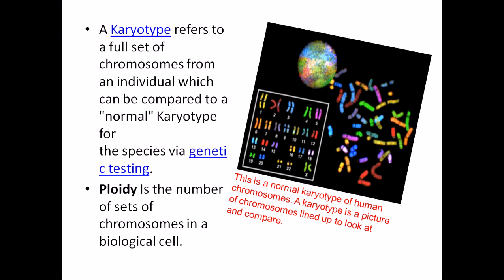To know whether the chromosome set present in the human body is normal, the only way is to produce a karyotype. A karyotype is a picture of all the chromosomes present in a cell. We produce it on a glass slide and add different fluorescent tags to visualize whether each chromosome is correct in length, or whether there is any duplication, deletion, or change in shape and size. A normal karyotype shows 23 pairs of chromosomes — 22 pairs of autosomes and one pair of sex chromosomes.